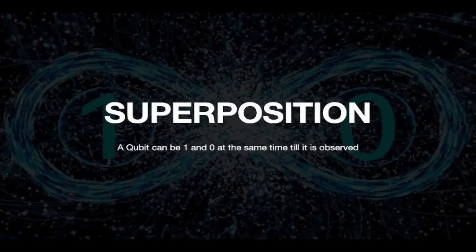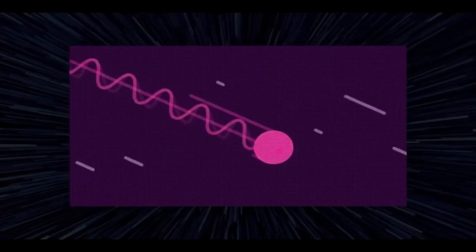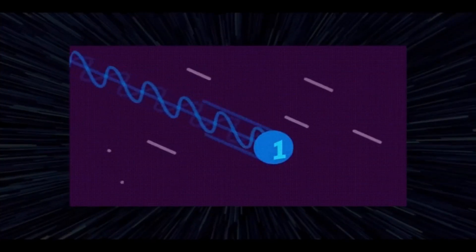Moving on to the effects of quantum mechanics, which are important to understand the working of a qubit. The first one is superposition — some things can hold two values at once until it is measured or stopped. For example, a picture can be seen as both a rabbit and a duck in superposition. A coin which is flipped is both heads and tails until it comes to a rest. Similarly, in quantum computing, many values are stored together in superposition, so a qubit can be 1 and 0 at the same time. But the probability of either outcome is not always 50-50 — we can alter it. Quantum operations can operate on all values at once and change the probabilities of each result. Operations gradually refine the values until the likely correct outcome is reached. After measurement, any superposition collapses, leaving only the measured value.